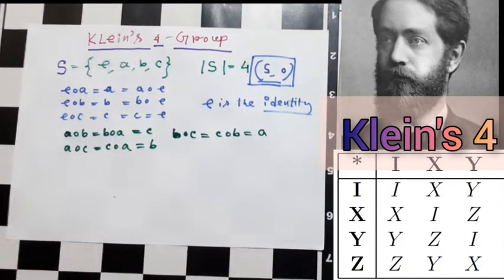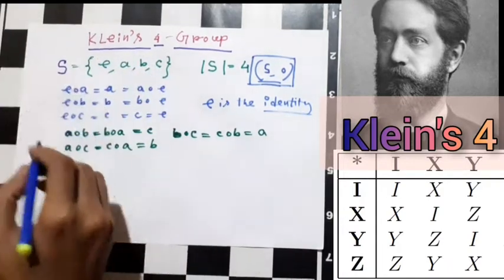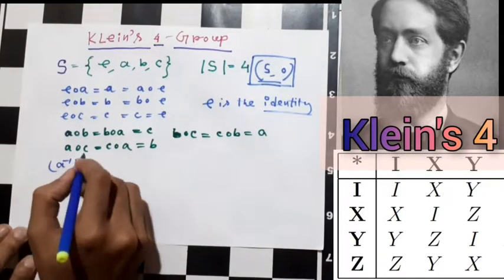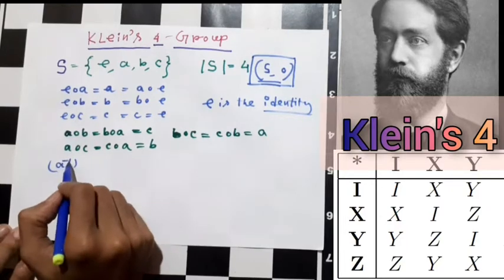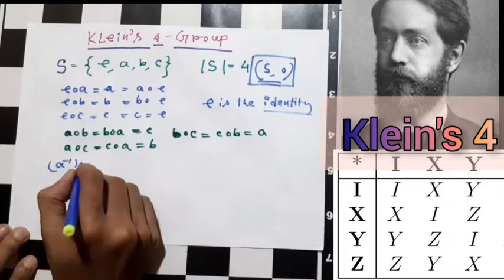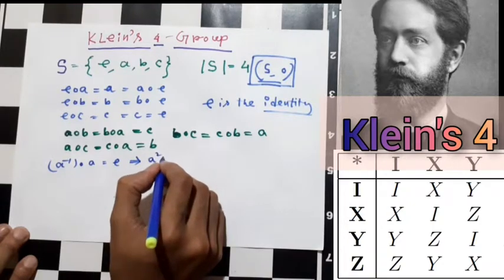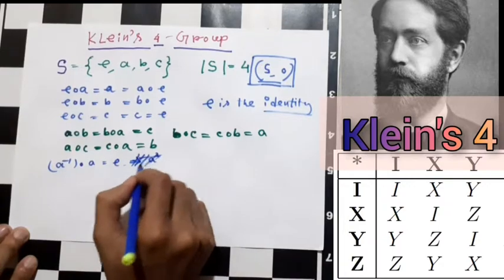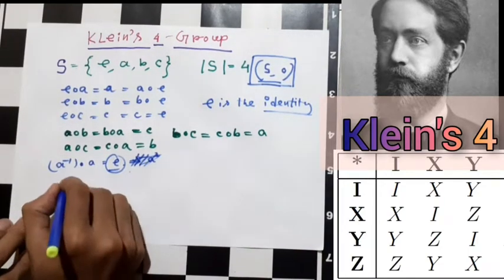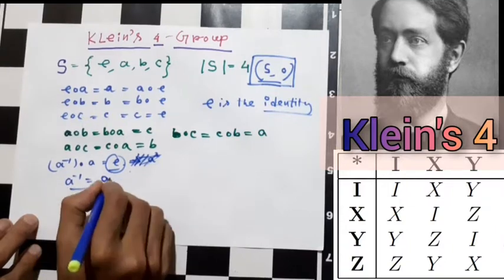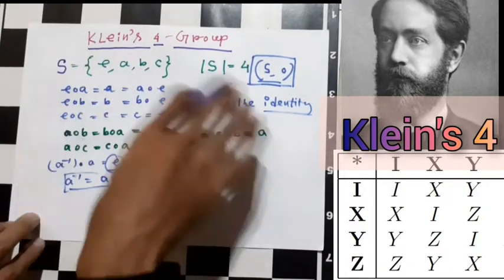From this construction we can verify what the inverse of each element is. To find the inverse of an element, you need to compose it with something to get e, the identity. It turns out that a composed with a equals e, so a inverse equals a. Similarly, b inverse equals b, and c inverse equals c. Every element is its own inverse.